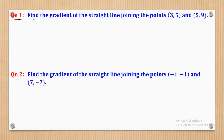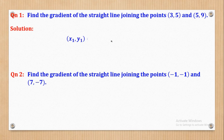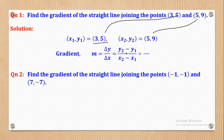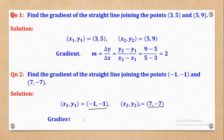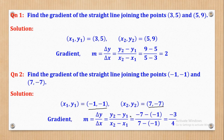Question 1: Find the gradient of a straight line joining two given points. x₁, y₁ is the first point and x₂, y₂ is the second. The gradient is y₂ − y₁ over x₂ − x₁, which gives 9 − 5 over 5 − 3 = 2. Question 2: Find the gradient of the straight line joining (negative 1, negative 1) and (7, negative 7). Gradient is change in Y over change in X, giving negative 3 over 4.